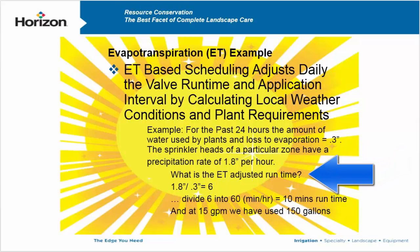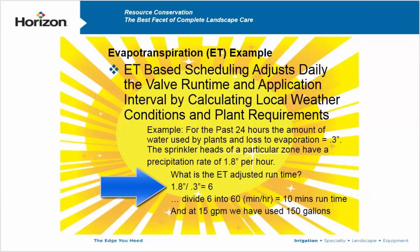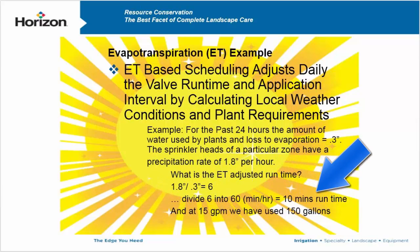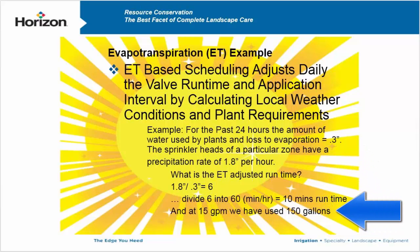What is the adjusted ET runtime for that station? You take the 1.8 inches per hour — that's the rate of the heads — and divide it by 0.3, which is the water coming off the plant in evaporation. That equals six. Then you divide that six into 60 minutes because it's measured in inches per hour, giving us a 10-minute runtime. With 15 gallons per minute coming through the system, that 15 times 10 minutes equals 150 gallons of water used today.